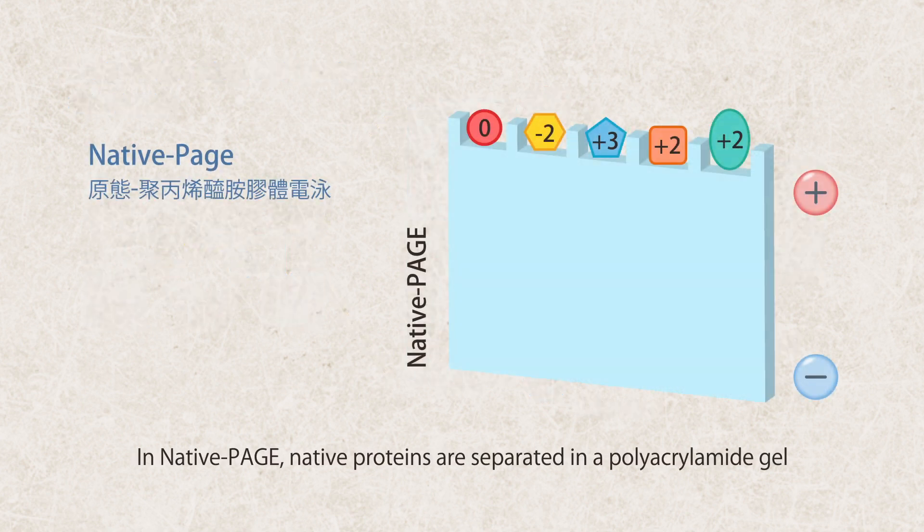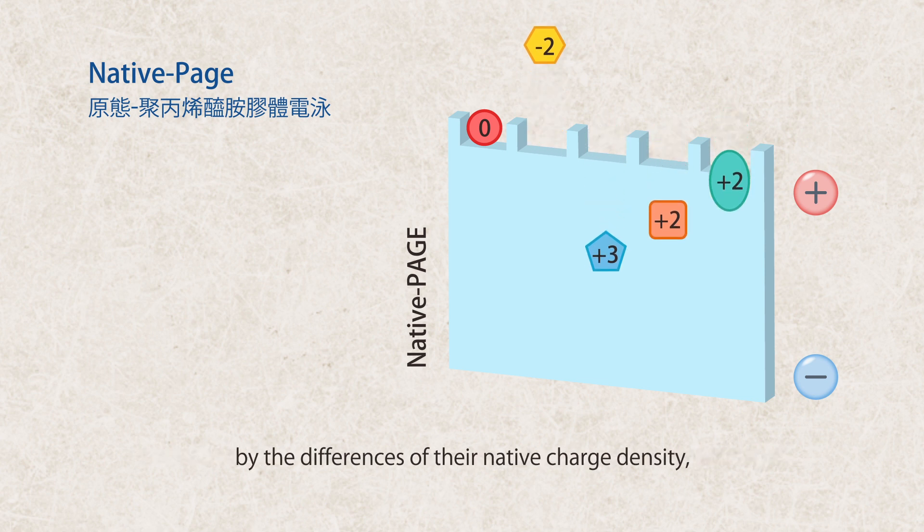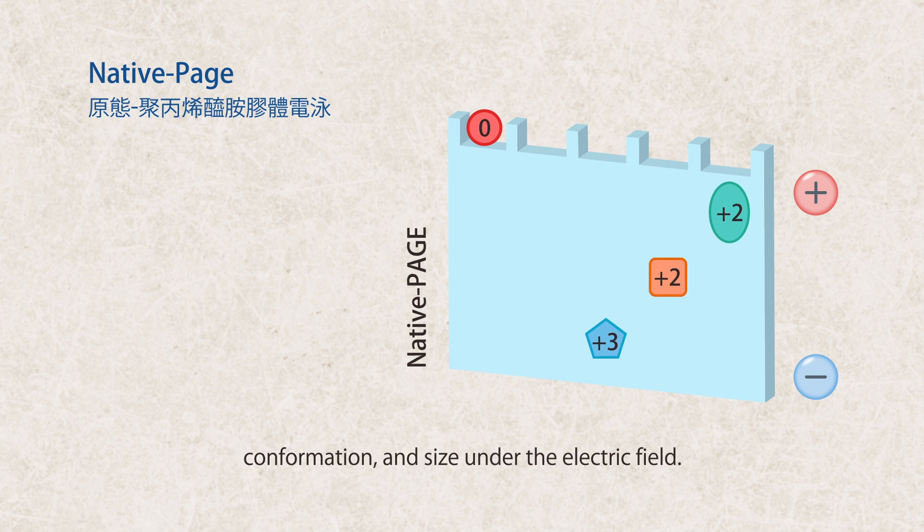In native PAGE, native proteins are separated in a polyacrylamide gel by the differences of their native charge density, conformation, and size under the electric field.